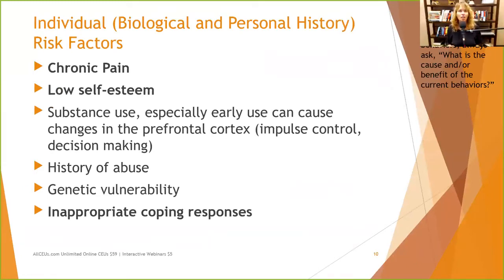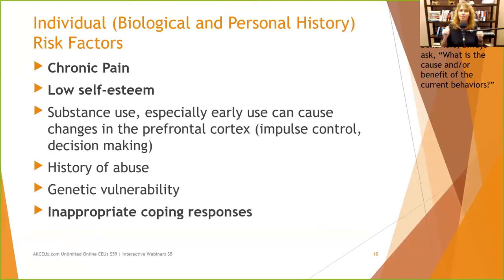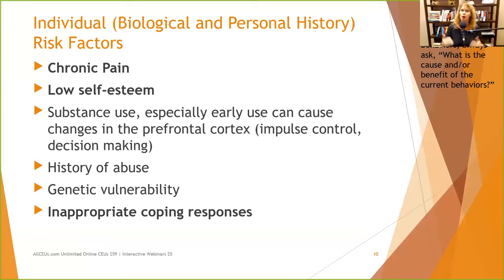Now let's start talking about what we can actually do — how can we operationalize all of this? We realize that if we affect the individual, it'll have a positive effect on the mesosystem, which can have a positive effect on the exosystem, and so on. One of the only things we really have a lot of control over is the individual — ourselves. And a lot of people come to counseling individually.